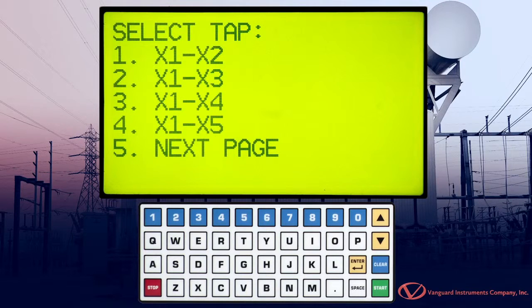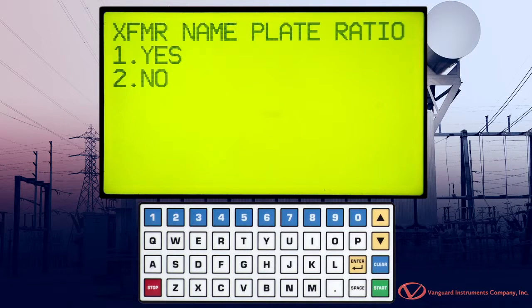Now select the tap connection by pressing the corresponding key. For this example, we're using tap X1 to X2, so we'll press the 1 key.